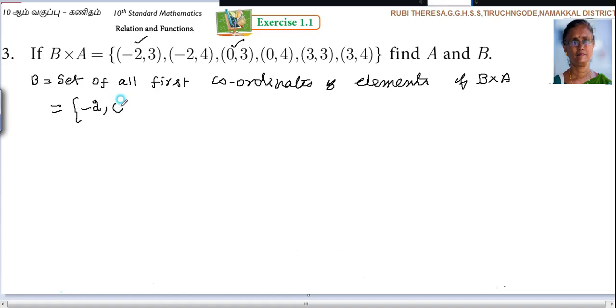Next one is 0. Even though it repeats, you should not write it one more time. Only write it once. Next is 3. So set B equals {-2, 0, 3}. This is the answer.